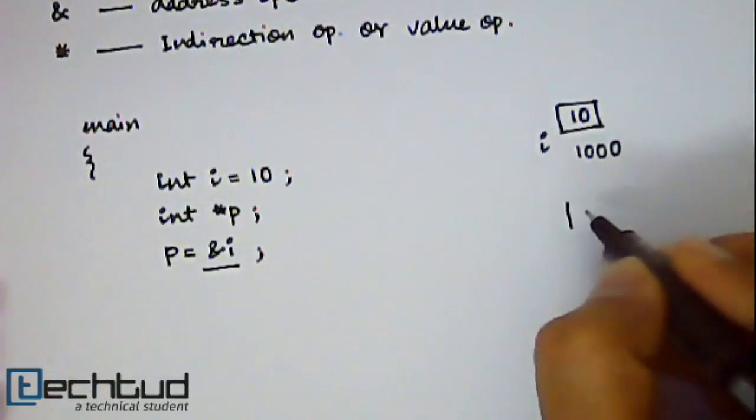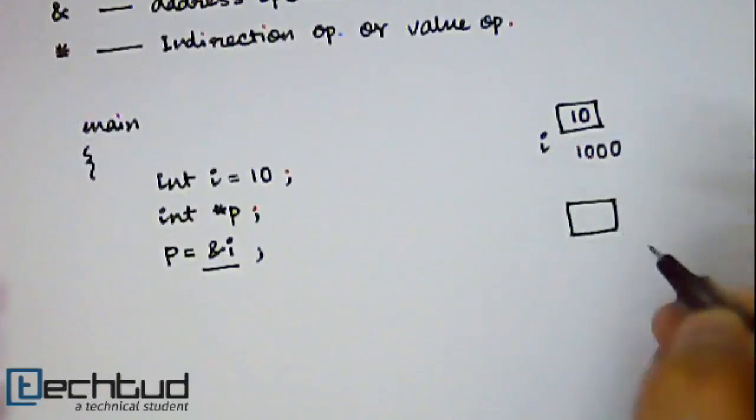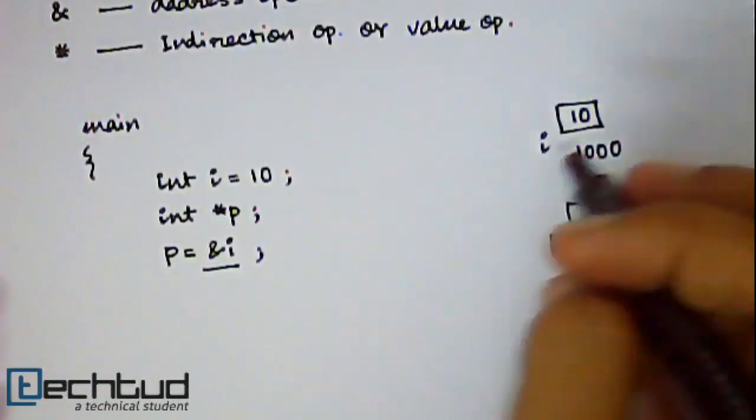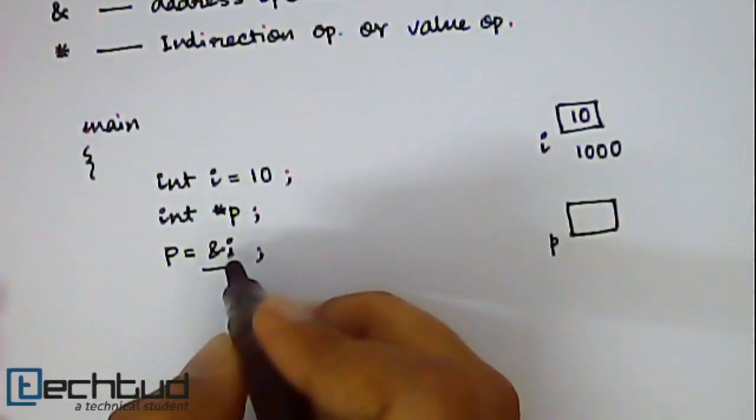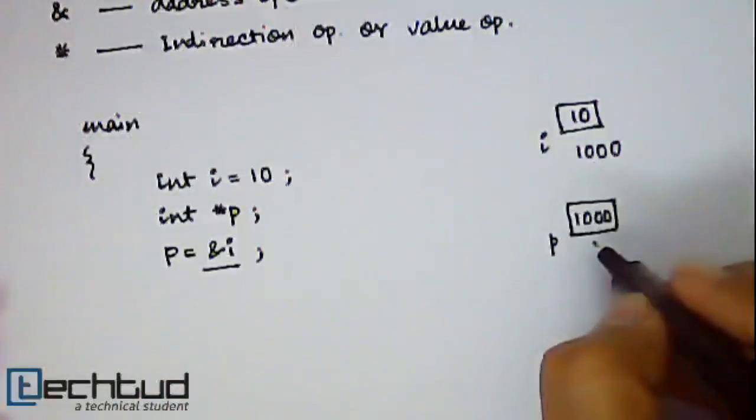So p you have also defined. It is a variable so it will also occupy a memory location. Its name is p. Now as you are assigning the address of i inside p. It will contain 1000 and let's say the memory location of p is 2000.